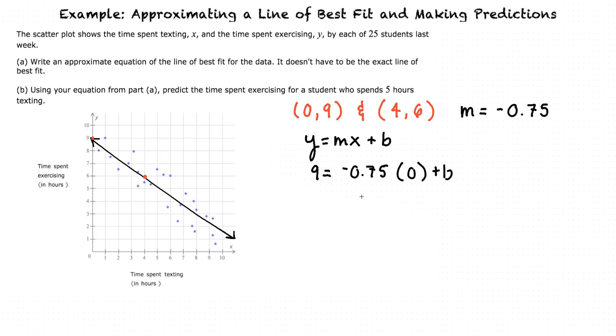0 times anything is just 0. So this simplifies to 9 equals 0 plus b, or 9 equals b, which can be rewritten as b equals 9.